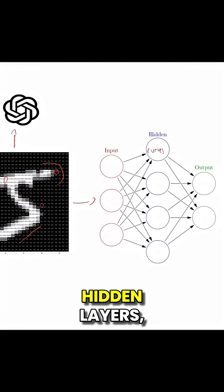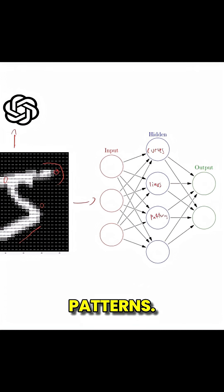As that information moves through hidden layers, each one acts like a filter. One layer finds edges, another spots curves, another builds patterns. Bit by bit, the network starts recognizing what it's seeing.